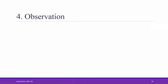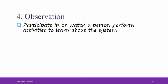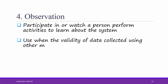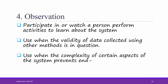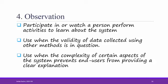The next technique for gathering requirements is observation. This refers to when analysts participate in or watch a person perform their activities to learn about the system. For example, an analyst might sit down with a staff member and watch him or her do their daily work. It's nice to use observation when the validity of data collected using other methods is in question. Sometimes people have a hard time explaining things or don't even realize all the key details of their work. If you ask them in a questionnaire or an interview how long something takes them to do, they might have a hard time estimating it, and you'll get a better idea by actually observing them. Use observation when the complexity of certain aspects of the system prevents end users from providing clear explanations.